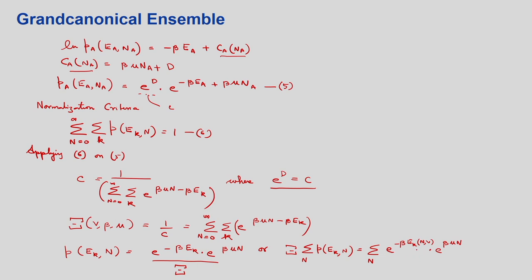The overall expression for the grand canonical partition function is Ξ = Σ_N Q(N,V,T) × e^(N μ/kT). Remember that Q is the canonical partition function, and this canonical partition function is substituted here. This completes the probability expression. Once we have the probability expression, we can find out the thermodynamic properties.